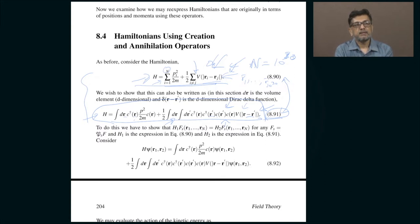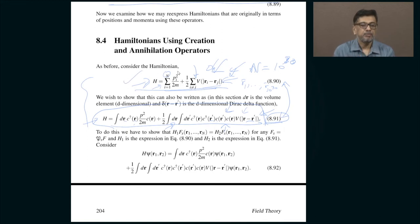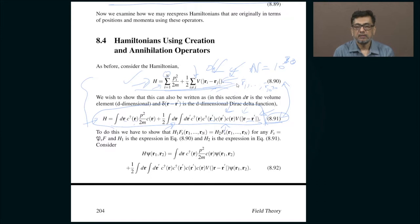There are advantages and disadvantages to doing this. The advantage is that the Hamiltonian which initially consisted of capital N number of variables — where capital N could be macroscopically large, say 10 to the 30, corresponding to the number of electrons in a macroscopic metal — you would be able to recast such a Hamiltonian, which has an unreasonably large number of variables that you simply cannot handle, into a form that looks a lot more manageable.